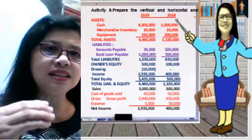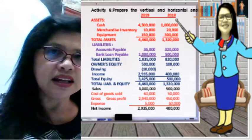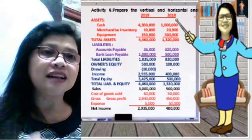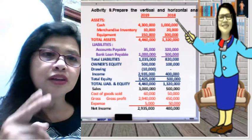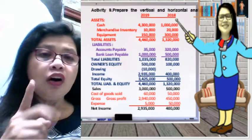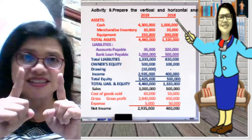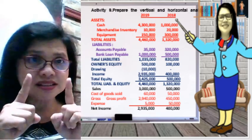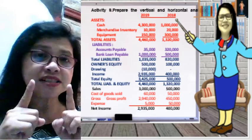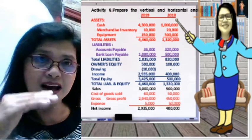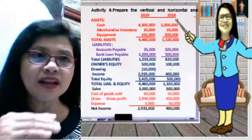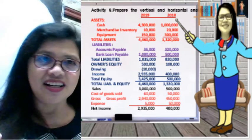A liability account is compared to the total liabilities account. That is the vertical analysis. When we prepare the horizontal analysis, we are talking about the increase or decrease over at least two years — the increase or decrease of each account from one year to the other.